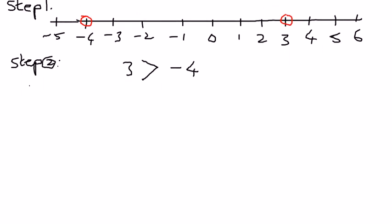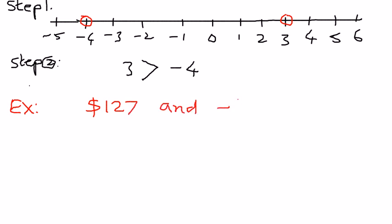Let's look at another example. This time we want to place the correct symbol between two numbers like this. The numbers we have are $127 and negative $150. These are the two numbers we have. Instead of just plain numbers, I wanted to make it a little bit more interesting, and therefore I selected the dollar amount.